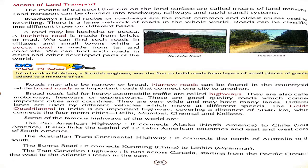Land transport includes roadways, railways, and the rapid transit system. Roadways are the most common ones that we use for traveling, so we use roadways the most. Roads are also divided into different types.